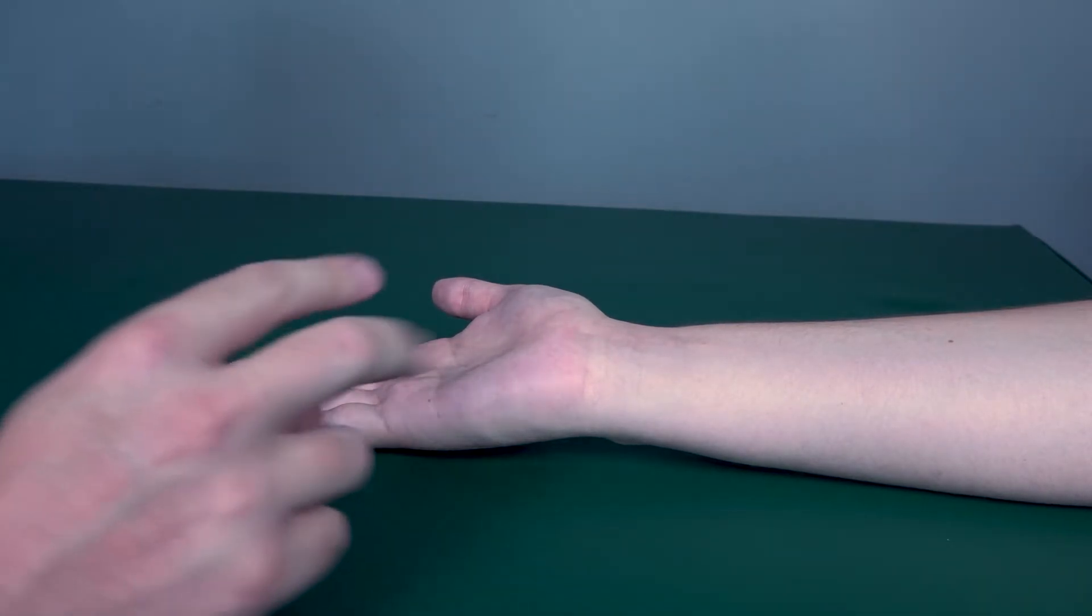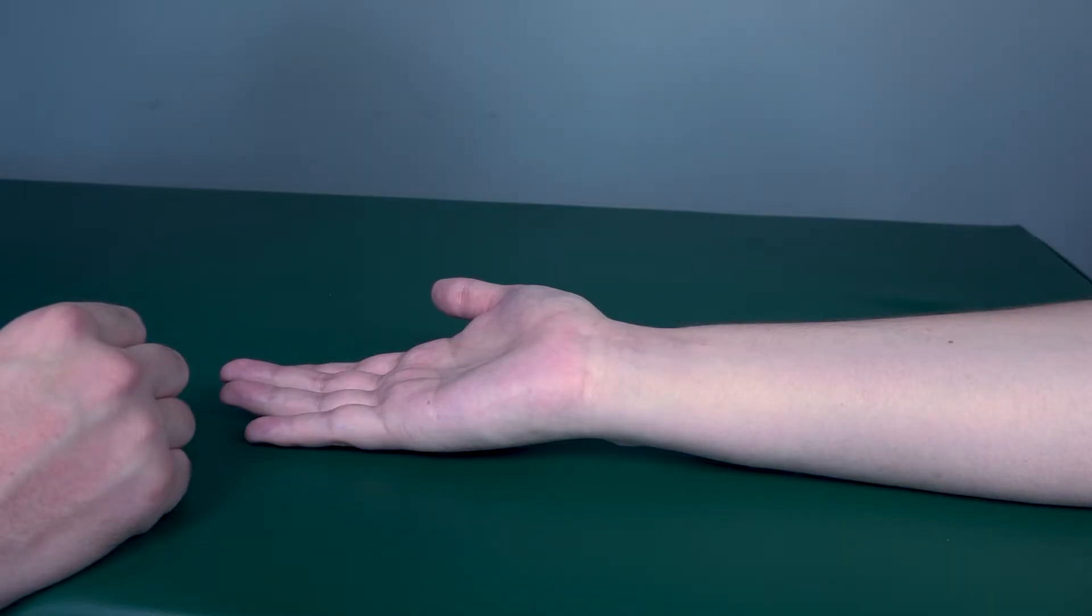We will be testing for two muscles, the flexor carpi radialis and the flexor carpi ulnaris. The first one that we will do will be the flexor carpi radialis.